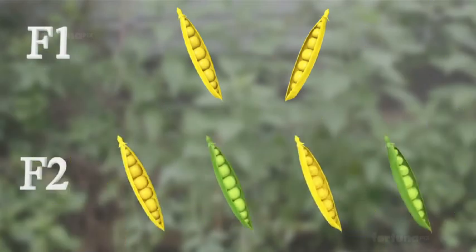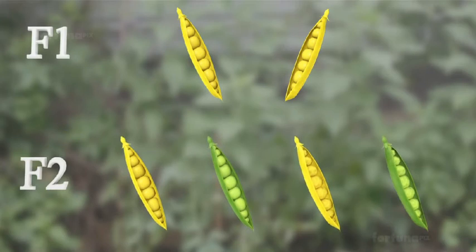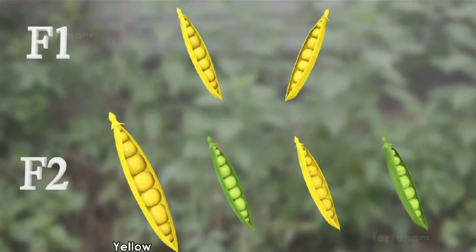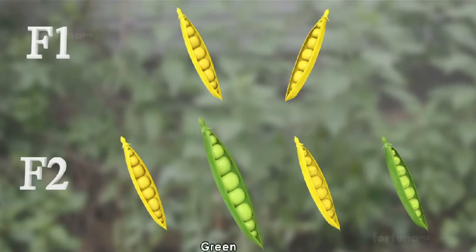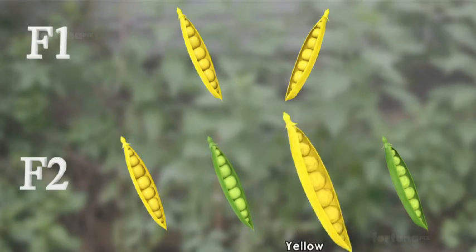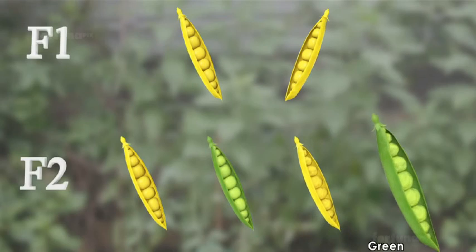In the F2 generation, the plants produced yellow round seeds, green round seeds, yellow wrinkled seeds, and green wrinkled seeds in a ratio of 9 to 3 to 3 to 1.